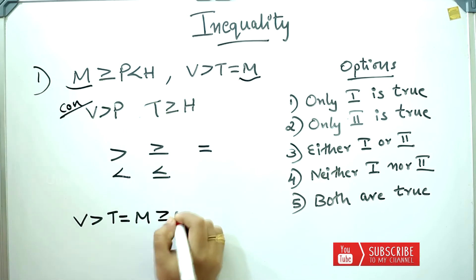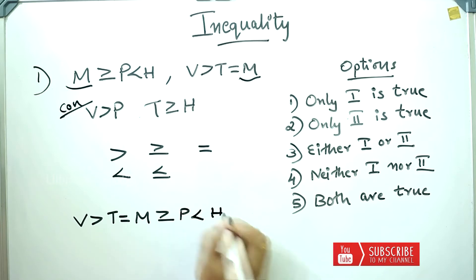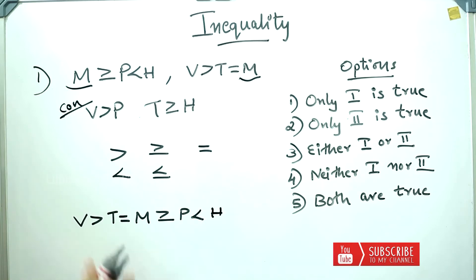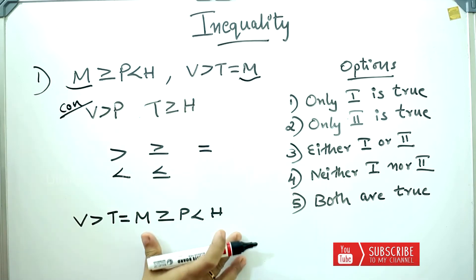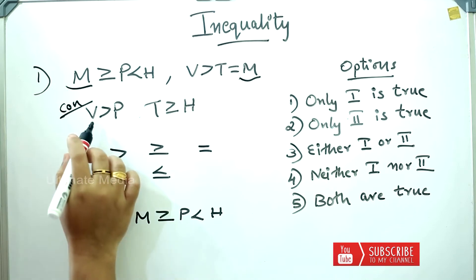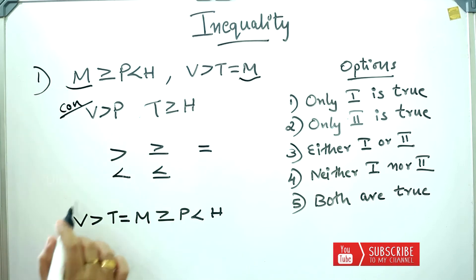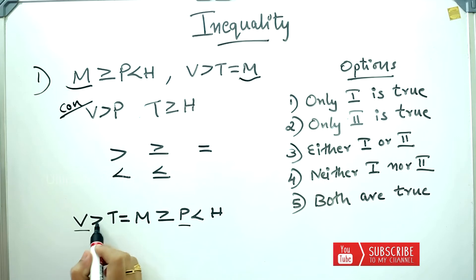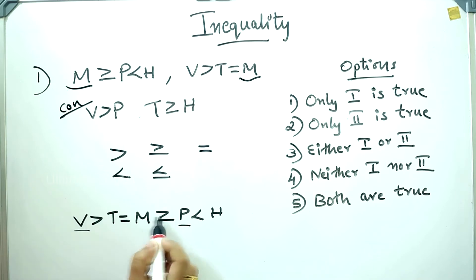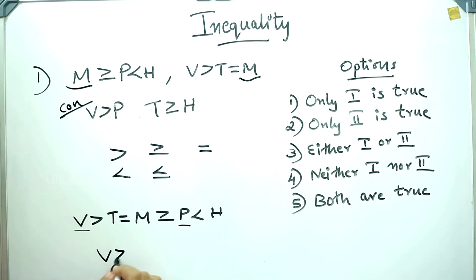Here is a question: M greater than or equal to P, less than H. Now let's get started. The statement is here. Now let's look at the conclusion. V is greater than P. V is here and P is here. What we have done is look at these symbols — that's why we are doing this. V is greater than P.